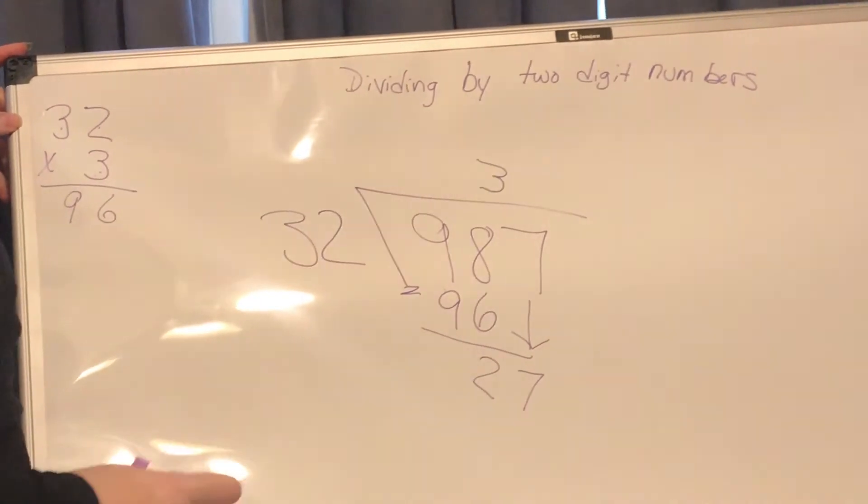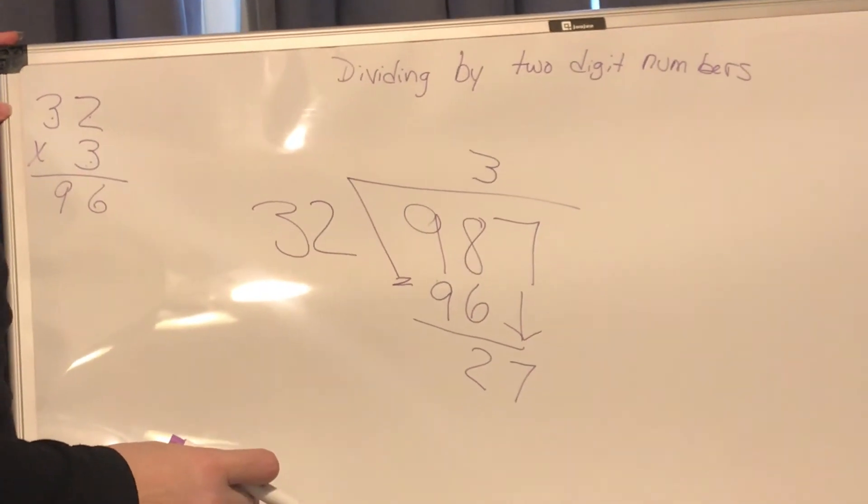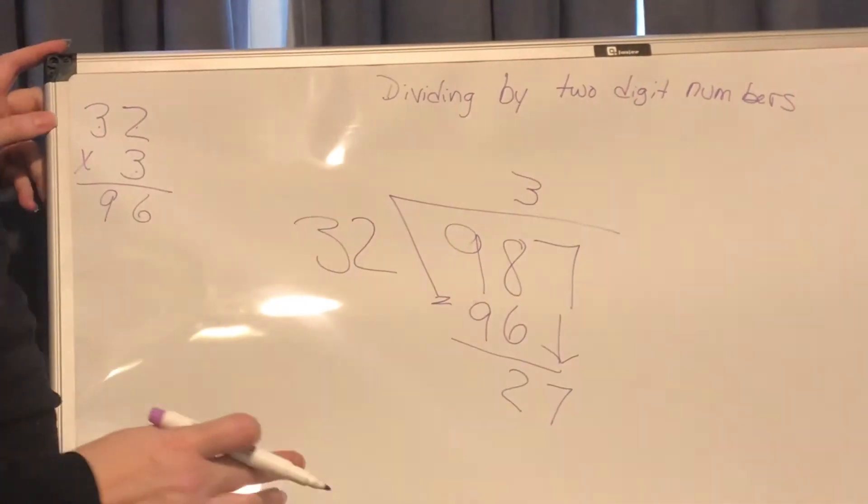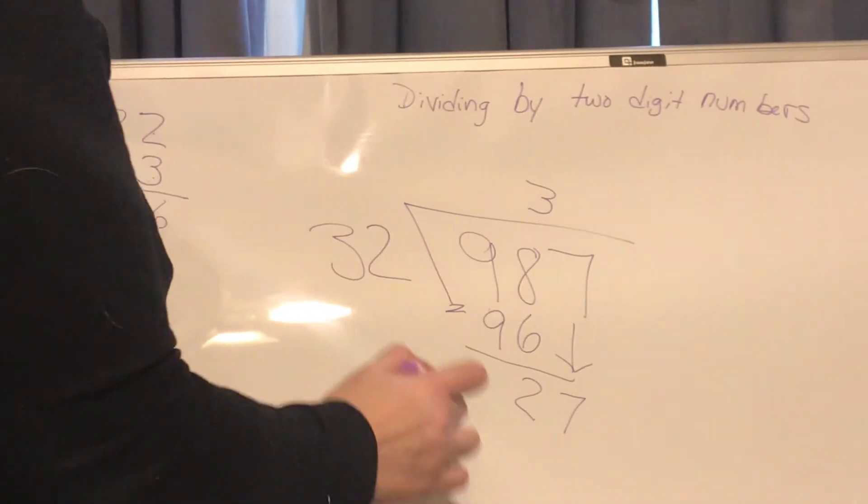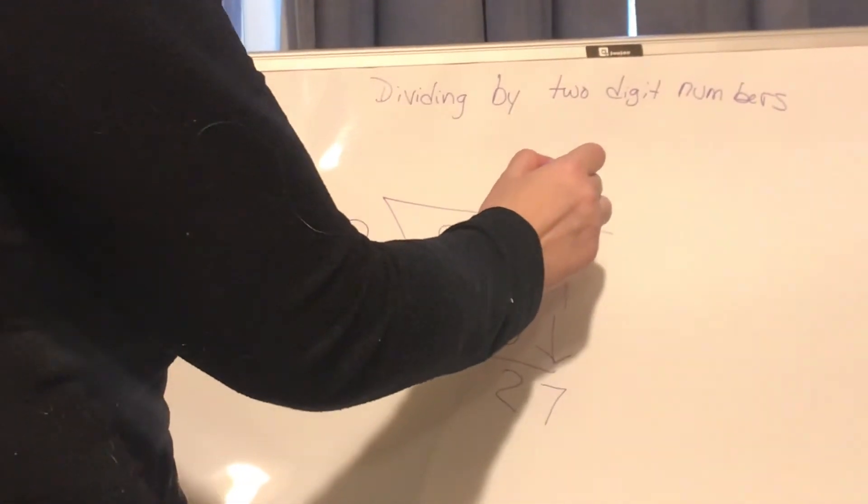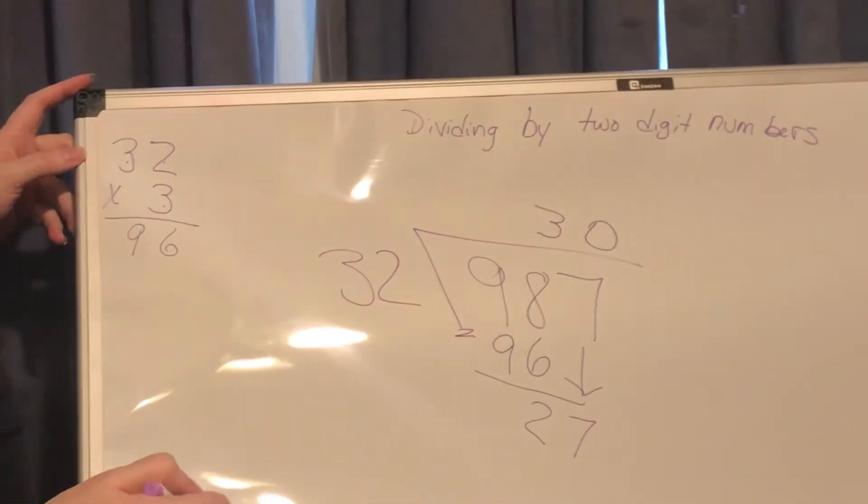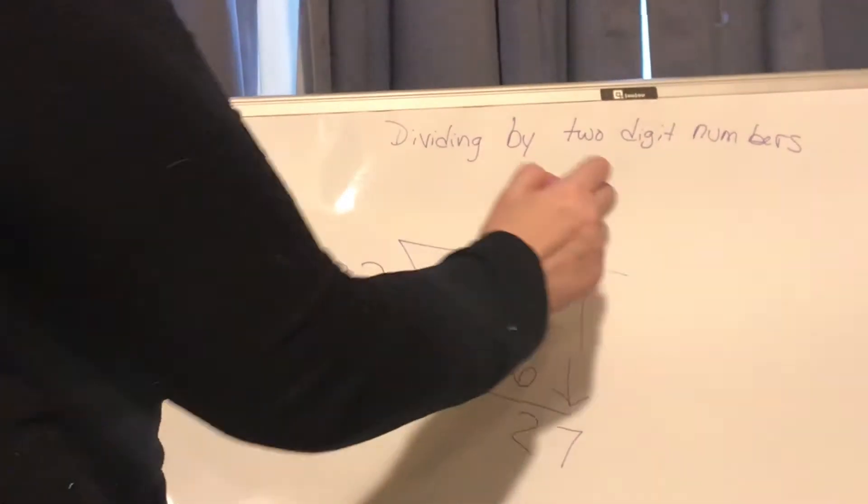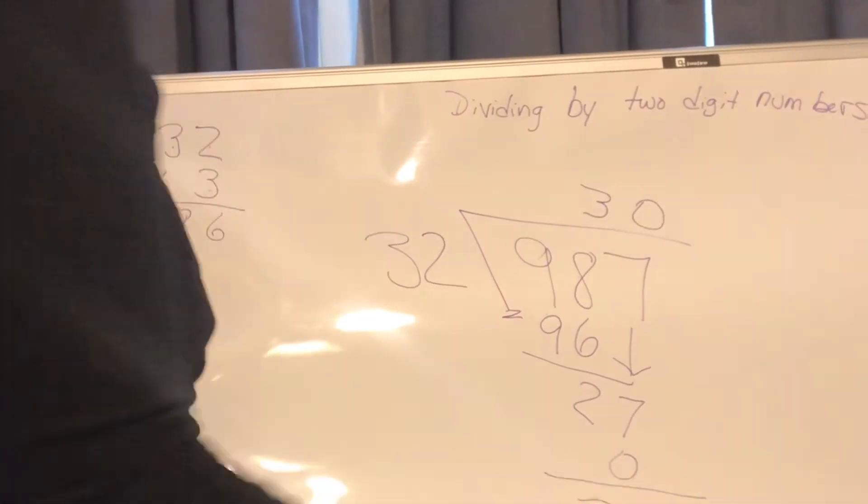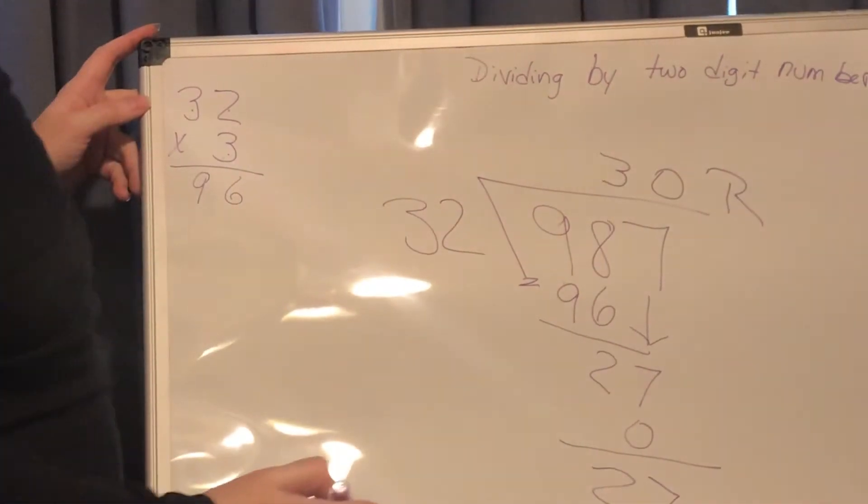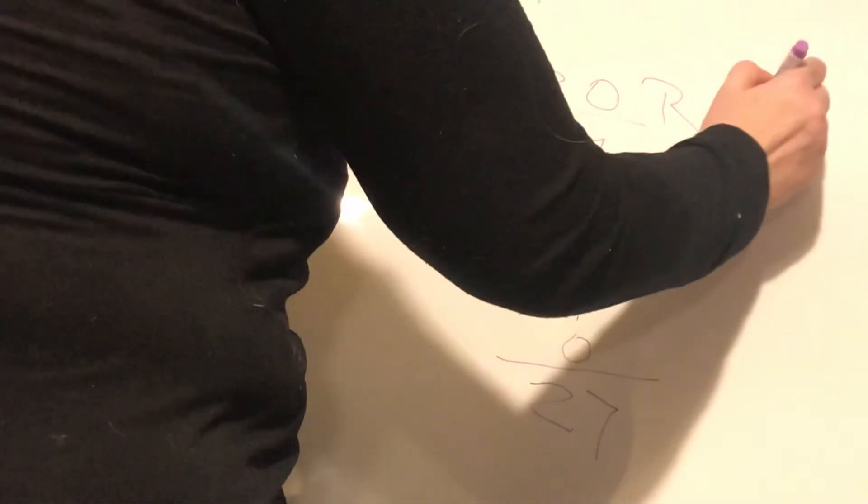And 32 can't go into 27. So what I have to do is put a 0 above that 7. 32 times 0 is 0. 27 is my remainder because I didn't have any more digits to bring down.